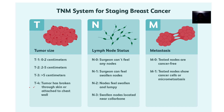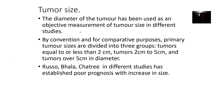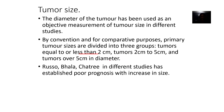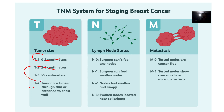So here's a summary. The diameter of the tumor has been used as an objective measurement of tumor size in different studies. For comparative purposes, primary tumors are divided into three groups: if the tumor size is less than two centimeters, that's T1; if it's two to five centimeters, that's T2; and if it's more than five centimeters, that's T3.